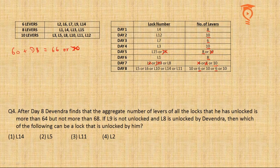The six-lever locks available on Day 8 are either L6 or L14. Among the given options, L14 is present. Some might argue the answer is 'cannot be determined' since both L6 and L14 are possible — but the question asks which lock 'can be' unlocked, not which 'will be.' That distinction makes a huge difference, and L14 is a valid answer.